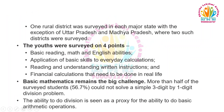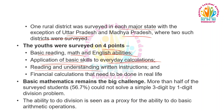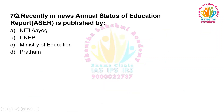One rural district was surveyed in each major state, with the exception of Uttar Pradesh and Madhya Pradesh where two districts were surveyed. The youth were surveyed on four points: basic reading, math, and English abilities; application of basic skills to everyday calculations; reading and understanding written instructions; and financial calculations needed in real life. Basic mathematics remains the big challenge — more than half of the surveyed students could not solve a simple 3-digit by 1-digit division problem. The ability to do division is seen as a proxy for the ability to do basic arithmetic operations. So the answer is D: Pratham.